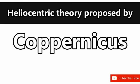Heliocentric theory proposed by whom? Answer: Copernicus. Polish astronomer Copernicus proposed the heliocentric theory. According to this theory, the sun lies at the center, and earth and other objects revolve around it.